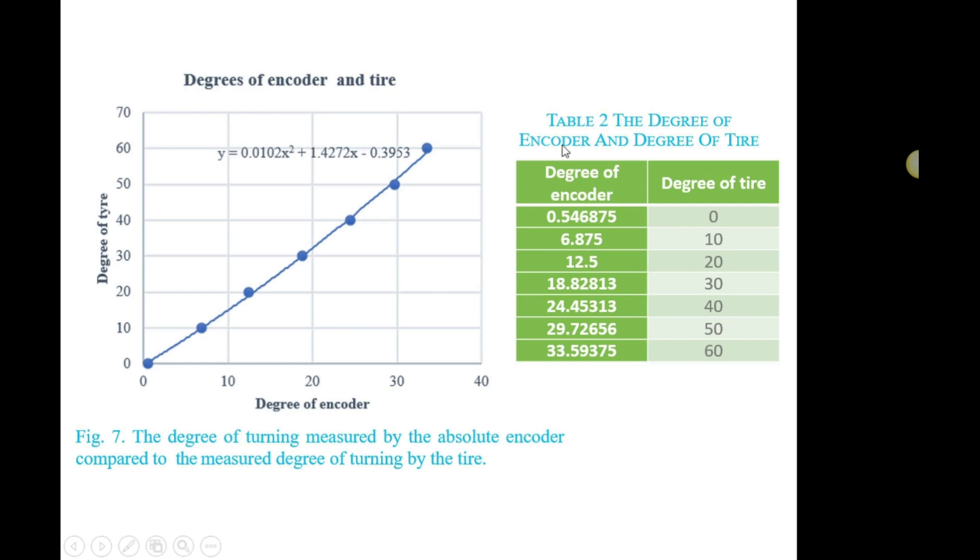This is the value from the steering system and the degree movement of the tire, the actual movement. We tabulated it in the graph and obtained this function, which is used to convert the degree of the encoder to the degree of the tire. When user input from the joystick is given, the encoder reads the angle made by the steering system, converts it to the degree of the tire, so the tire movement matches the specified value.